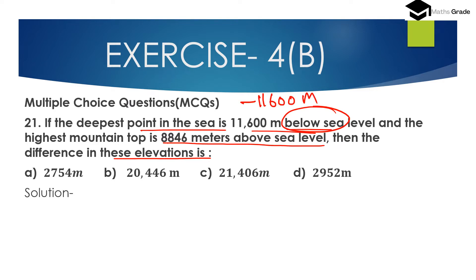Below sea level is represented with a negative sign, so the deepest point is minus 11,600 metres. The highest mountain top is 8,846 metres above sea level. Above sea level is represented with a positive sign, so 8,846 metres is positive.